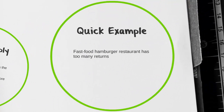We're going to take a look at a quick example for a fast food hamburger restaurant. The problem we're having is there are too many returns. Let's see what this looks like in our cause and effect diagram.